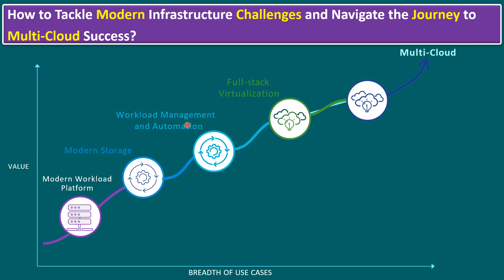Coming to the fourth stage: full-stack virtualization. Full-stack virtualization means our infrastructure is a completely software-defined data center — SDDC. SDDC means we have vSphere, virtual SAN, Tanzu, automation, and we also introduce NSX. The full-stack includes vSphere, vSAN, NSX, and the ARIA suite — which comes with Tanzu, automation, ARIA Operations, and ARIA Log Insight — as one complete software stack bundle. We call it full-stack virtualization.